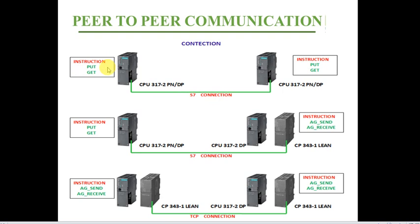The instructions we can use are PUT and GET, but we can also use BSEND and BRCV. I prefer BSEND/BRCV and will try to do a video on which one is better or when to use each instruction. The connection type is S7 connection — there are many connection types and I'll discuss their differences in coming videos.